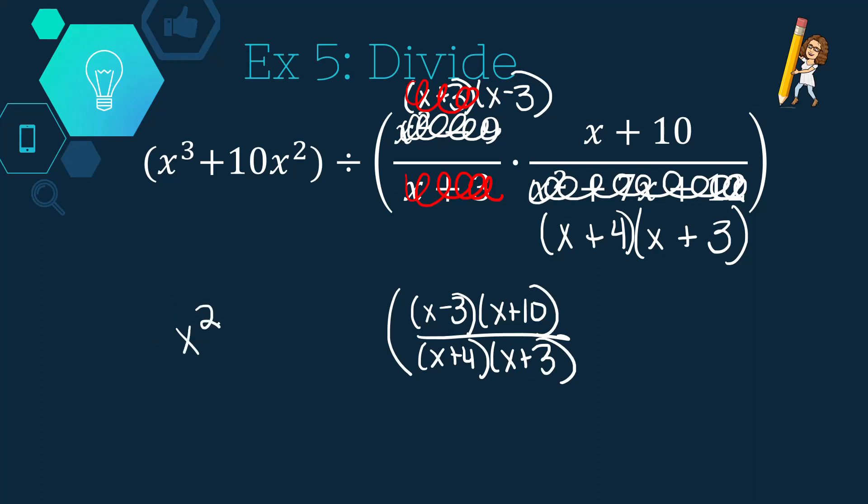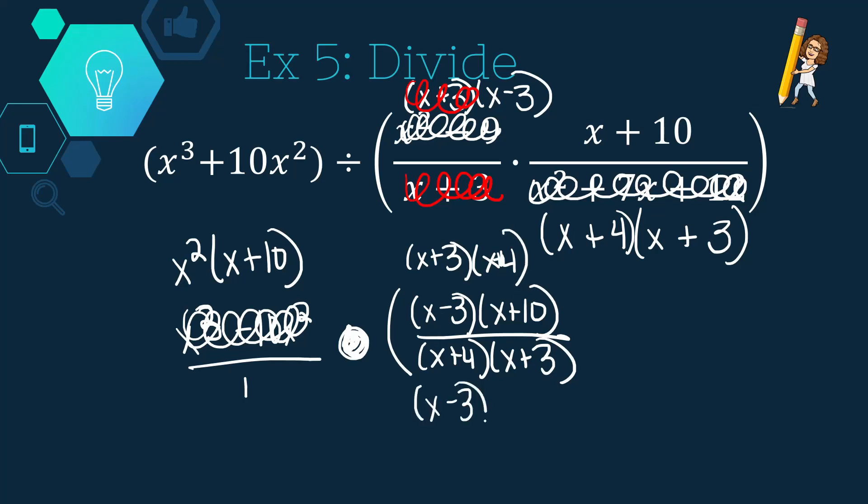Okay, now I'm going to rewrite what we have. x cubed plus 10x squared over 1. And we are dividing. Now, I'm going to simplify or factor that expression like we wanted to earlier. x squared times the quantity x plus 10 is what that factors into. I now need to change to multiplication. So, that means I'm going to have x plus 3 up top, x plus 4 on top. And x minus 3, x plus 10 on the bottom. So, I'm going to scribble those out.